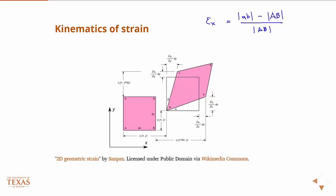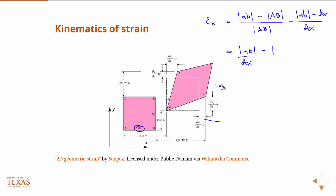Following the definition of engineering strain, the length of capital AB is dx — this is some infinitesimally small square. So I can rewrite this as AB minus dx over dx, and that's equal to AB over dx minus 1. If we solve this equation for AB, we have AB equal to that expression.